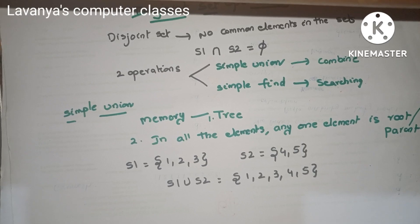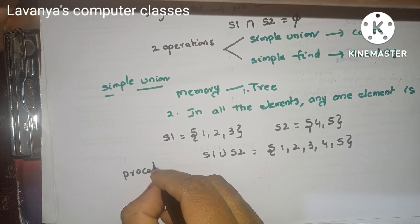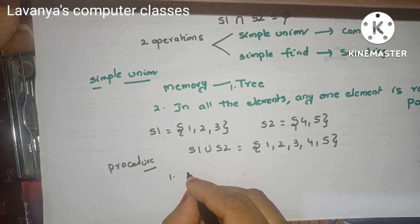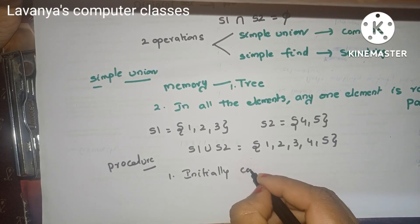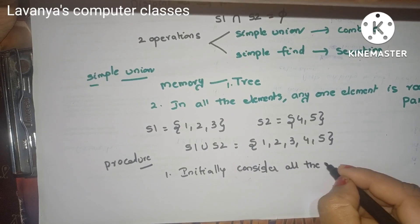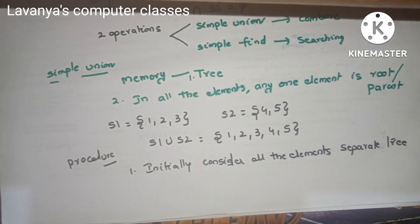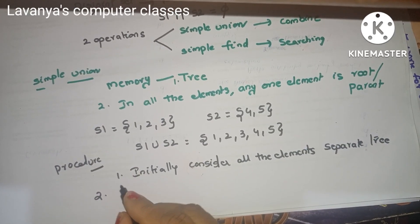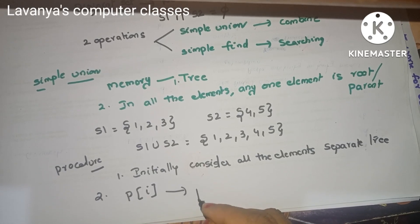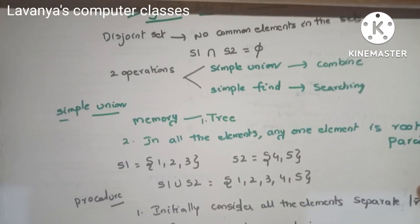Now we need a procedure to perform the union operation. There is a procedure to perform the Simple Union operation. In this procedure, the first step is to initially consider all elements as separate trees — each and every node is a separate tree.